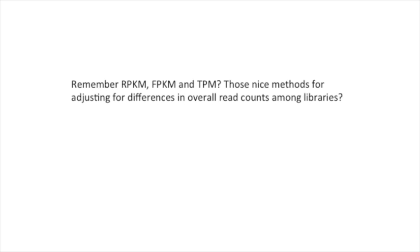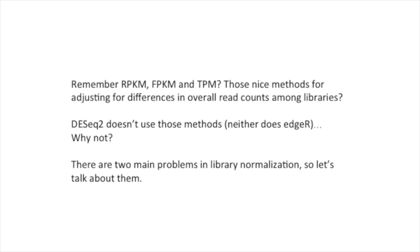Remember RPKM, FPKM, and TPM? Those nice methods for adjusting for differences in overall read counts among libraries? DESeq2 doesn't use those methods, and neither does EdgeR, by the way. Why not? There are two main problems in library normalization, so let's talk about them.